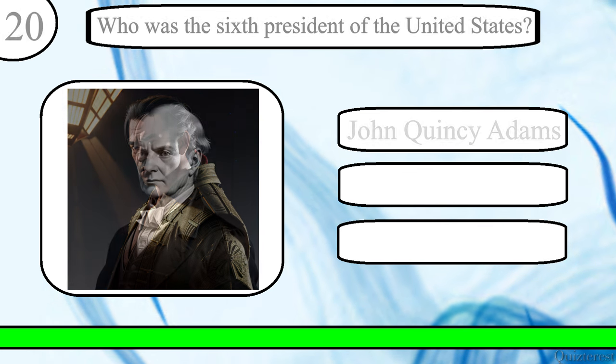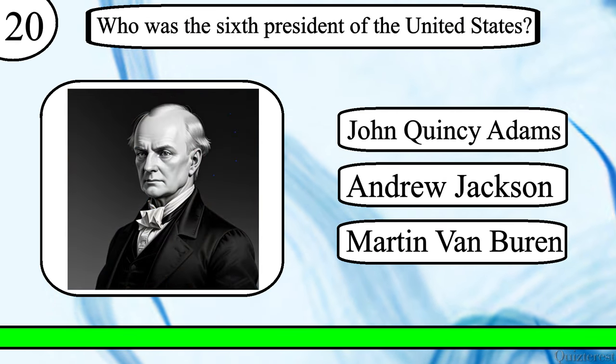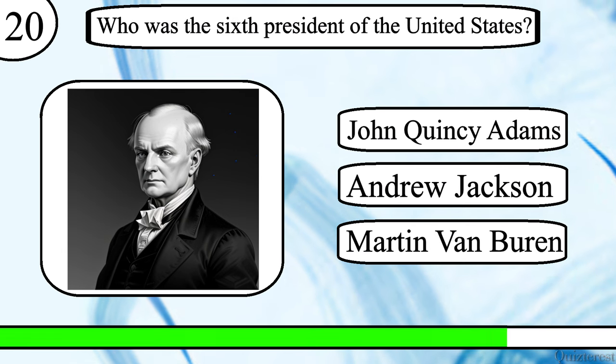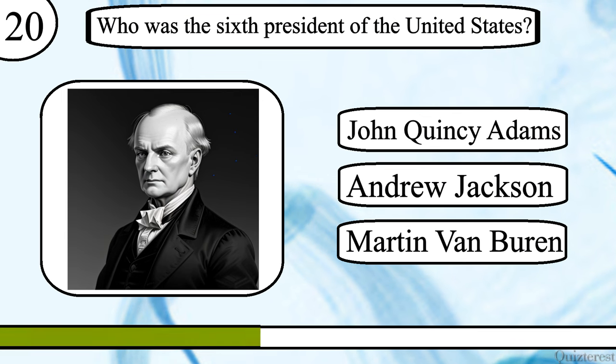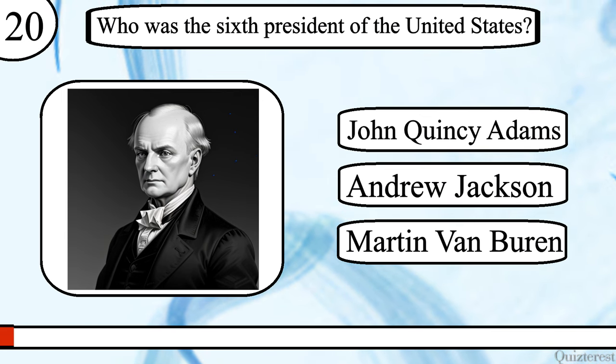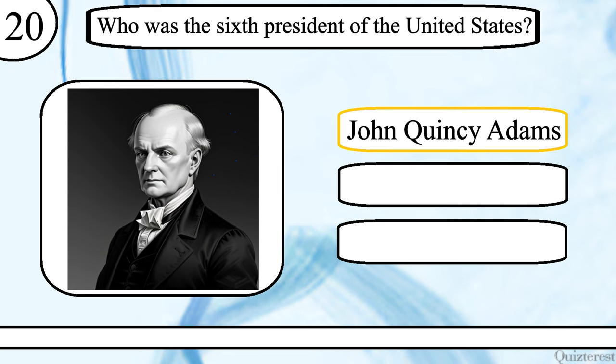Question 19. Who was the sixth president of the United States? John Quincy Adams, Andrew Jackson or Martin Van Buren? The correct answer is John Quincy Adams.